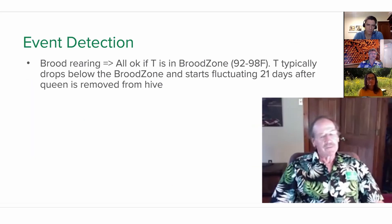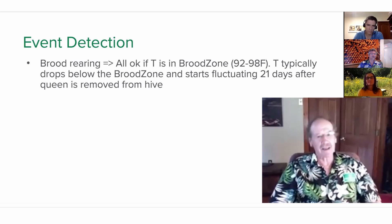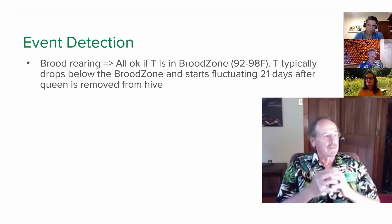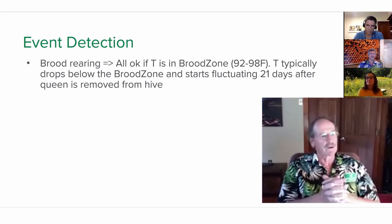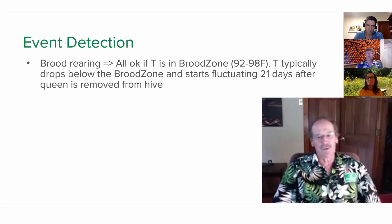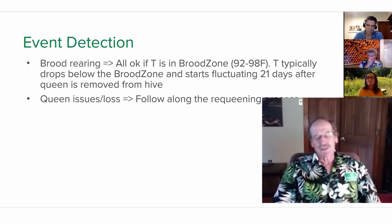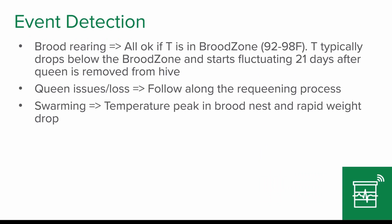We can detect events like brood reading — we're always okay if we are in the brood zone, 92 to 98 degrees F during the summer months. Typically the temperature drops below and starts fluctuating 21 days after the queen is removed from a hive, so we can tell if something goes on with a queen. We see swarming: a temperature peak in the brood nest typically happens when a swarm takes place, and at the same time we have a rapid weight drop of the hive.